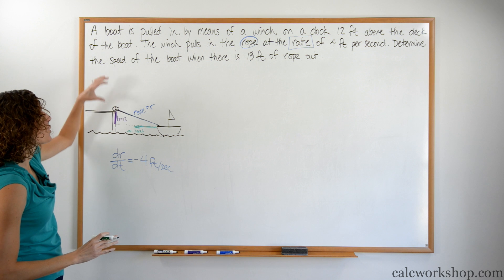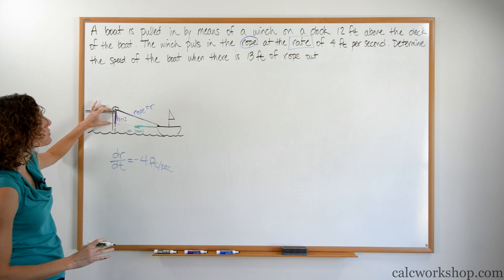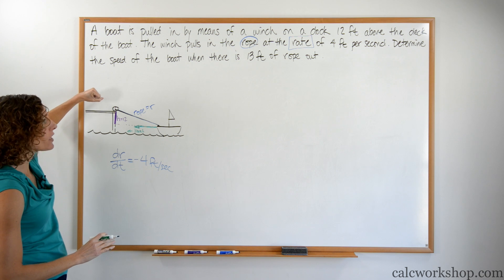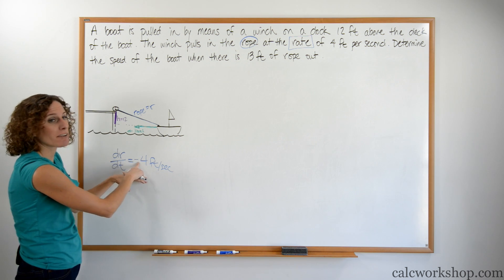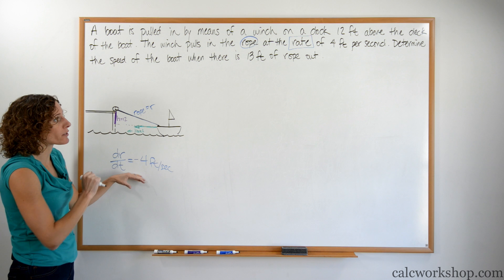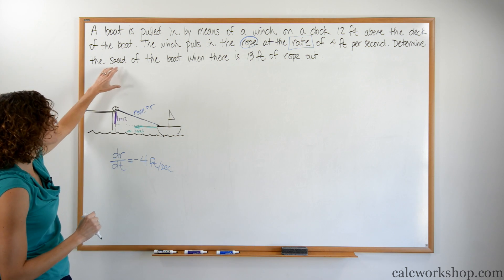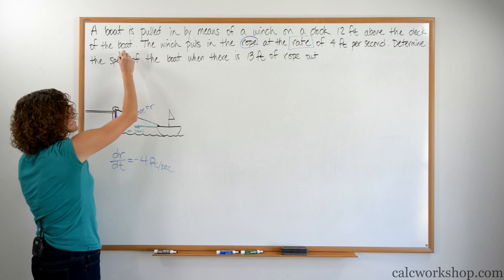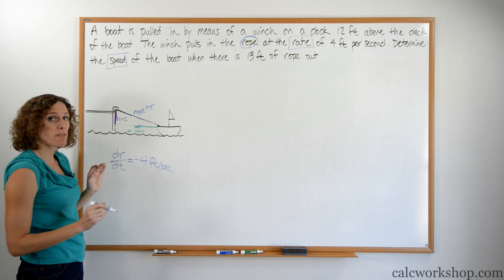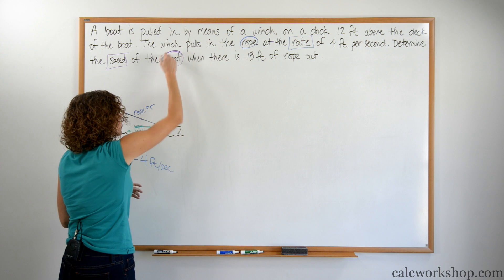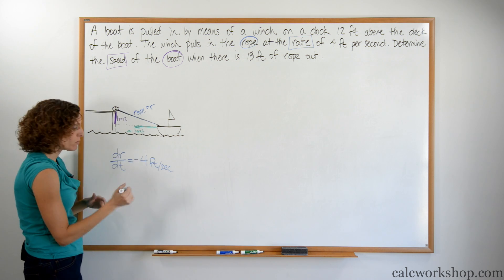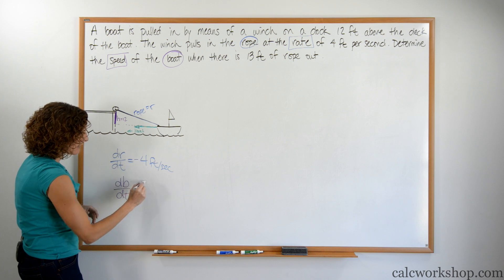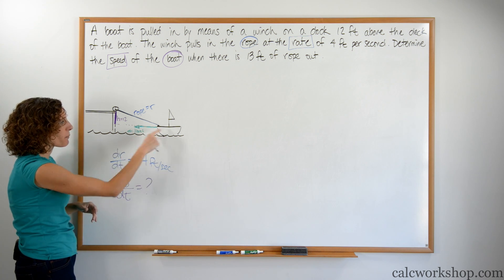We have the winch. We know that the winch is 12 feet above the deck of the boat. The winch pulls the rope in at a rate, a derivative, of 4 feet per second, but we recognized it was negative because it's getting smaller. Then it says determine the speed of the boat. Speed means derivative. The speed of the boat. We can say B for boat. So what we're looking for is db/dt. If we say the boat is B.